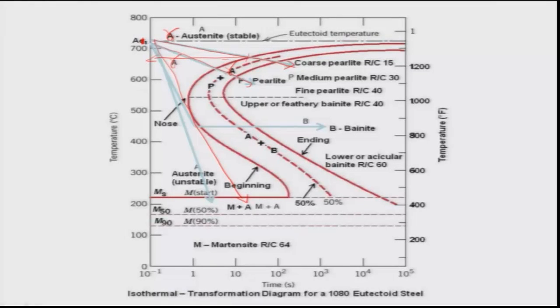To form bainite, you cool fast enough to bypass the pearlite transformation region and hold the steel at about 400–450°C for a long time — this is the isothermal holding in a high temperature bath I mentioned. If you keep it there long enough it will form bainite. Lower and upper bainite will have higher hardness, but martensite will have much higher hardness — it can have hardness of 64 RC or even higher. It is very important that you have a good understanding of this diagram.